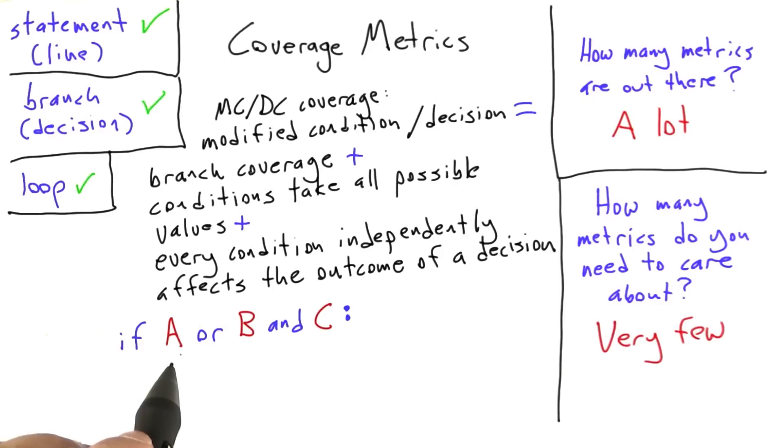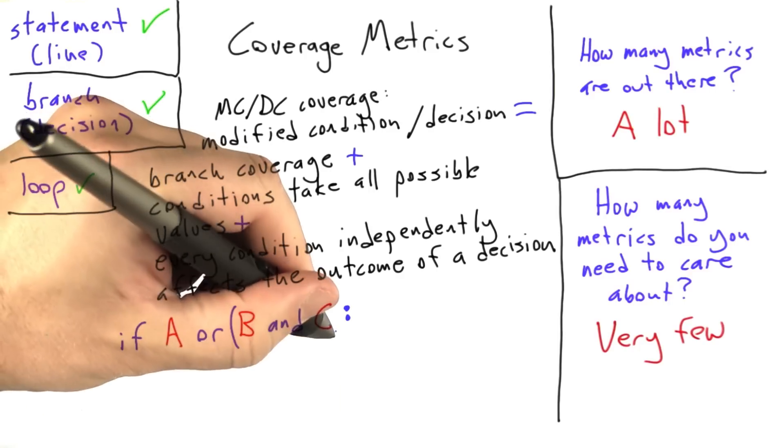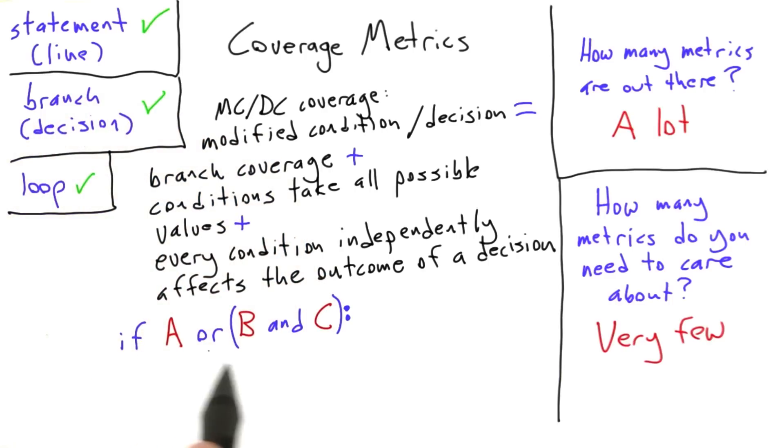So we're going to start off with a Python statement. If A or B and C, so let's make sure to nail down the precedence so we don't have to remember that. So if A is true or else both B and C are true, then we're going to execute some code.